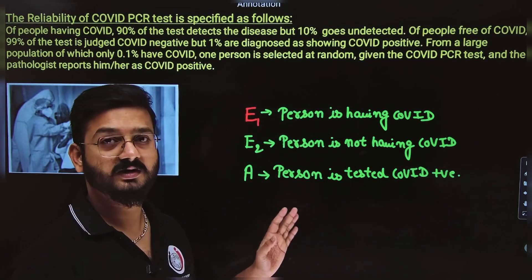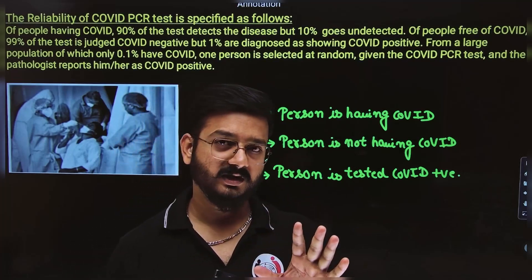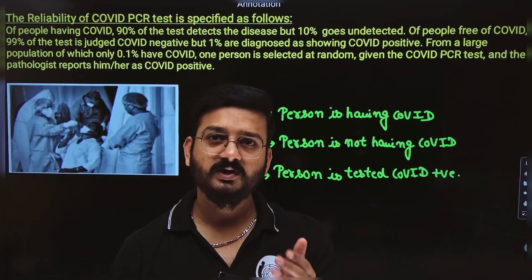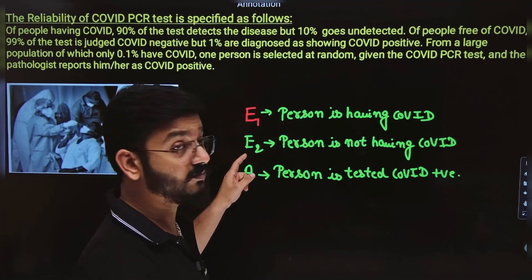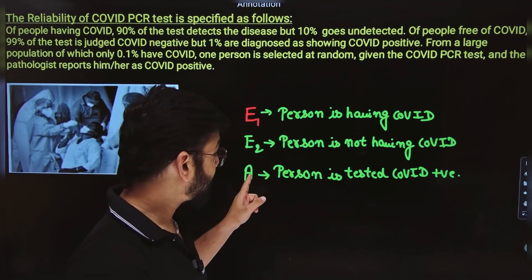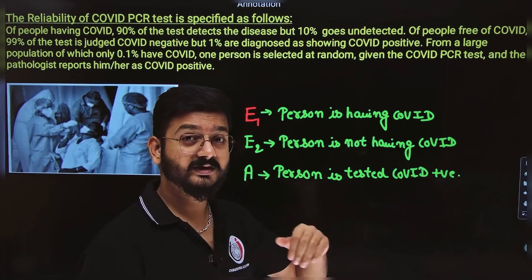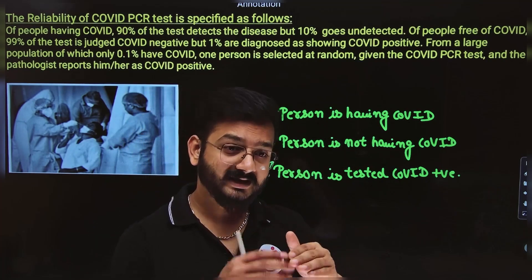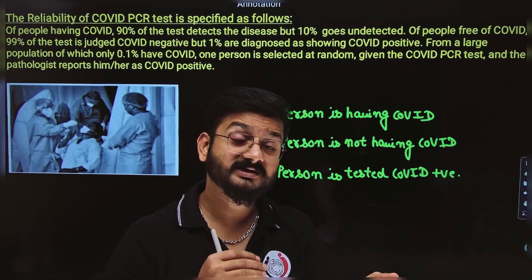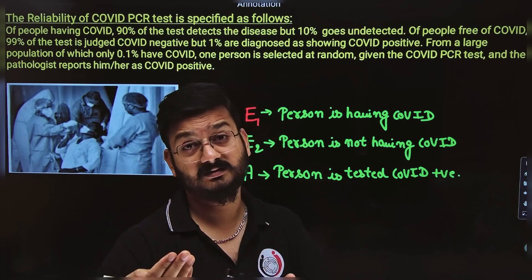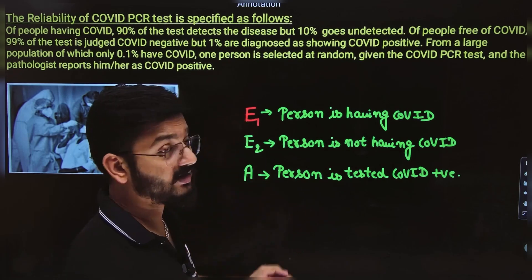This is the first thing you need to learn — how to define the event. When you read the question, define the event properly. E1 is the event where the person is having COVID, E2 is not having COVID. But A is something which is common to E1 and E2 both, because if a person has COVID and is tested positive, or a person doesn't have COVID and is still tested positive, A will be common to both events.